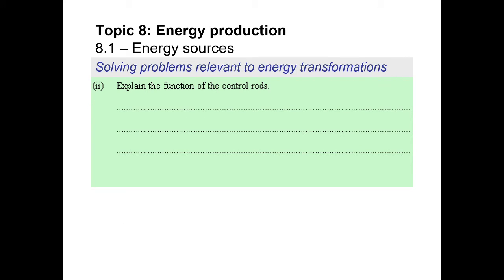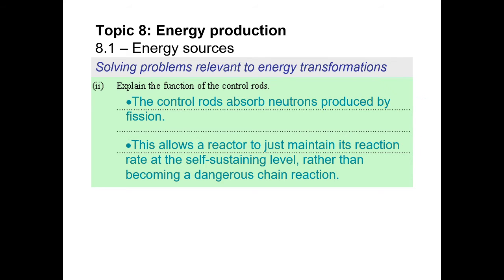Part two: explain the function of the control rods. The control rods absorb neutrons. If your reaction is getting too fast and producing too much energy — because this is exponential growth — you insert the control rods, which absorb the neutrons and prevent them from interacting with more uranium-235 nuclei. Similarly, if you want to speed up the rate of reaction, you can remove the control rods. Usually these control rods are made of boron, though other materials can work as well.